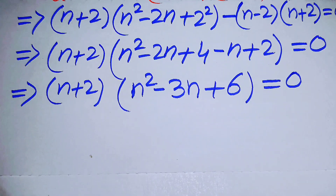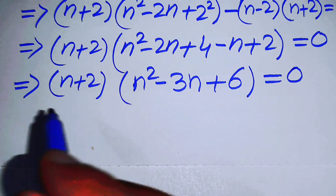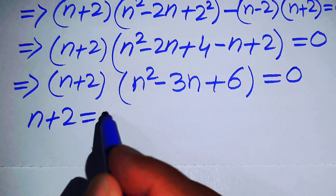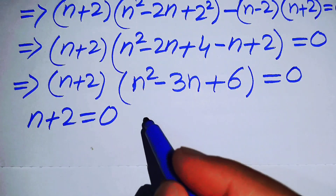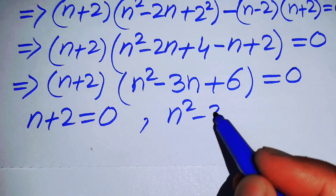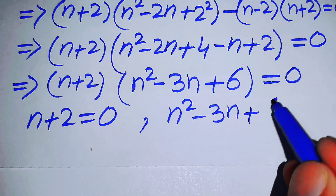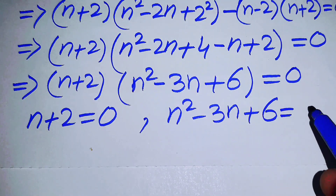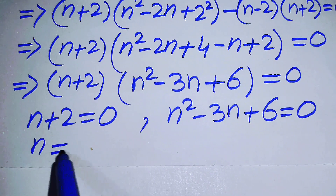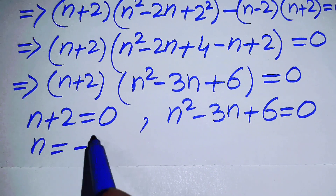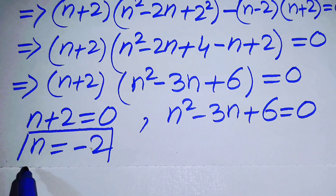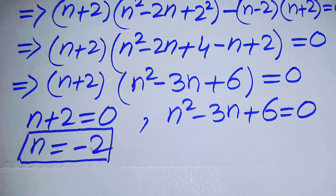We now have two cases. The first case is n + 2 = 0, and the second case is n² - 3n + 6 = 0. From the first case we get the first real root: n = -2.